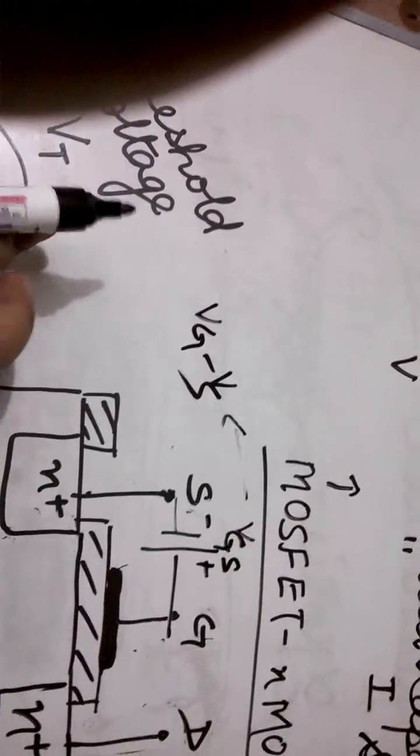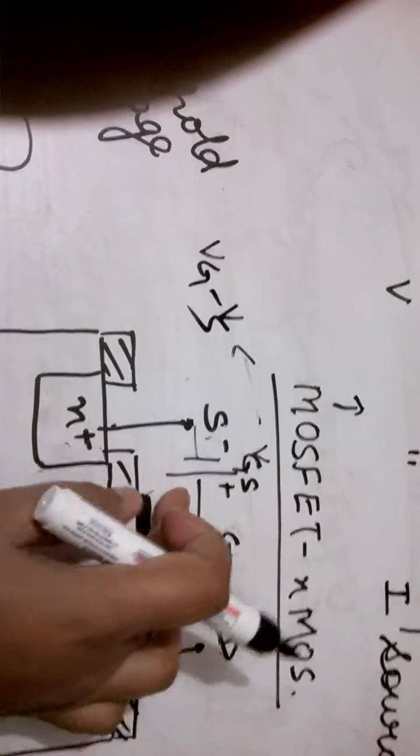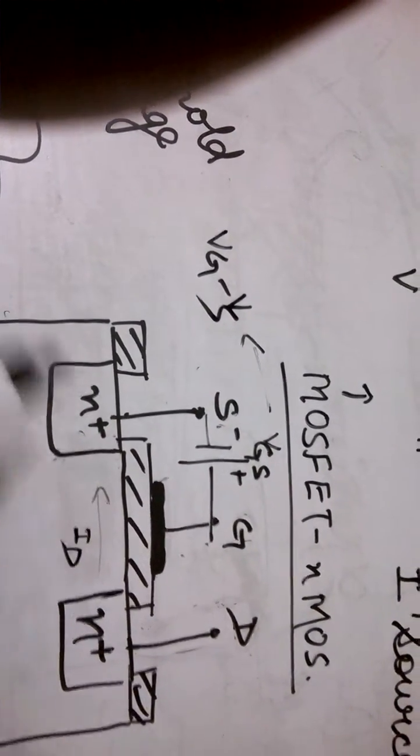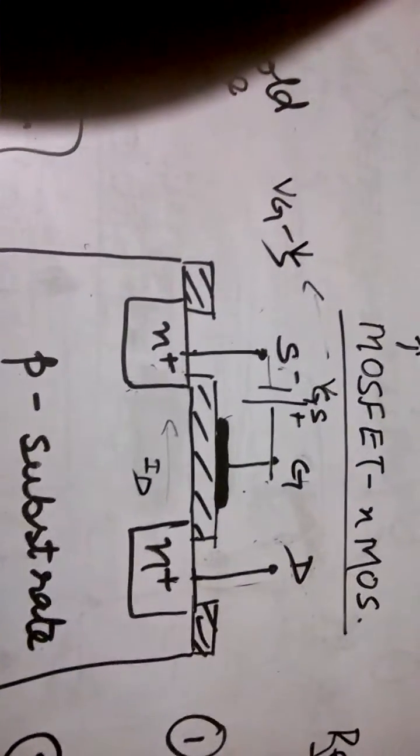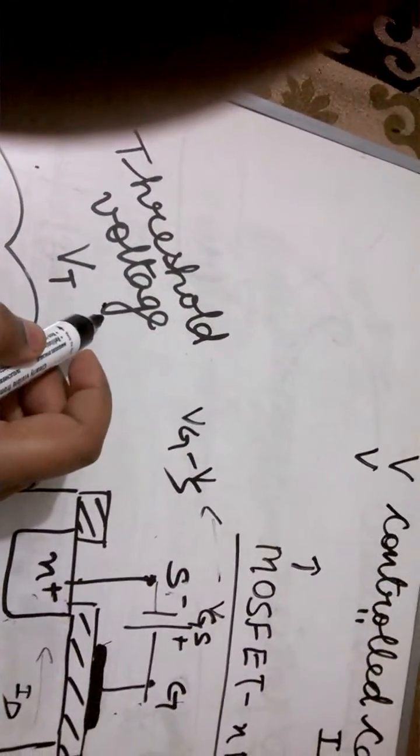So VT or threshold voltage will be that minimum VGS which is applied here so that there is some flow of drain current in the circuit. This is a very important concept as far as MOS device is concerned.